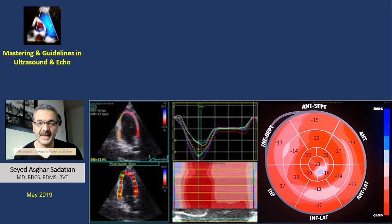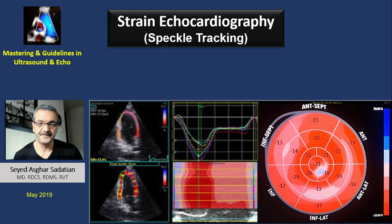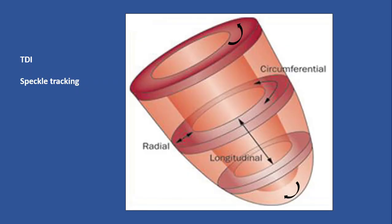Welcome to mastering guidelines in ultrasound and echo strain echocardiography by speckle tracking and tissue Doppler, part one: technique. As we learned from the concept of strain, we have at least four types: longitudinal, circumferential, radial, and rotational or twisting.